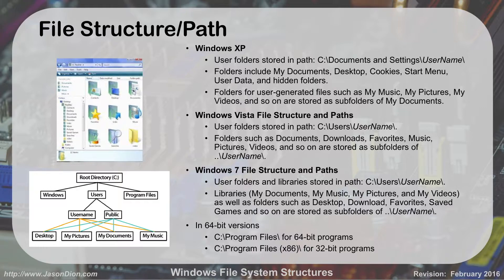When looking for program files on a 64-bit operating system, there are two folders. One is C:\Program Files, where your 64-bit programs go. The other is C:\Program Files (x86), where all your older 32-bit programs go. You don't necessarily need to care which folder it goes into because the installer handles it. But if you're looking for a particular program and can't find it under Program Files, it may be a 32-bit program, so check the x86 folder. A tree map on screen shows the C drive, Users folder, username, and sub-folders like Desktop, Pictures, Documents, and Music.